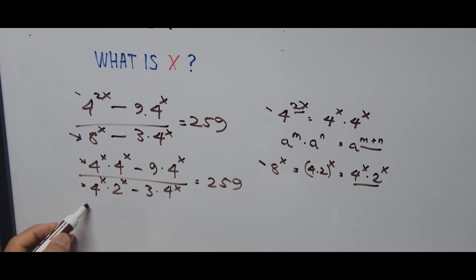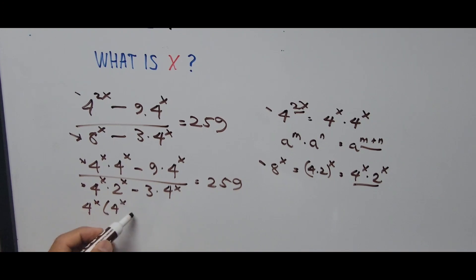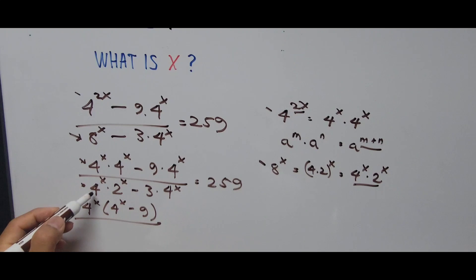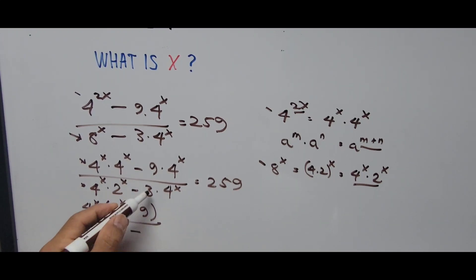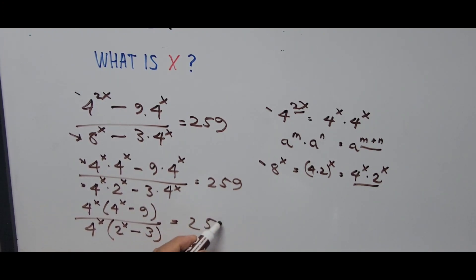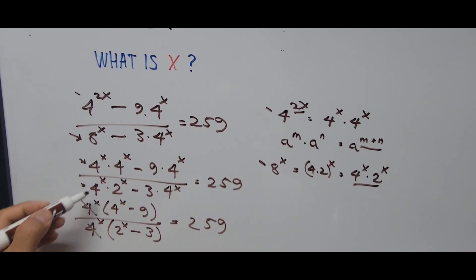Factoring out 4 raised to x, the numerator becomes 4 raised to x minus 9, divided by 4 raised to x. The denominator becomes 4 raised to x times the quantity 2 raised to x minus 3, equals 259. The 4 raised to x cancels, giving us the fraction (4 raised to x minus 9) divided by (2 raised to x minus 3) equals 259.